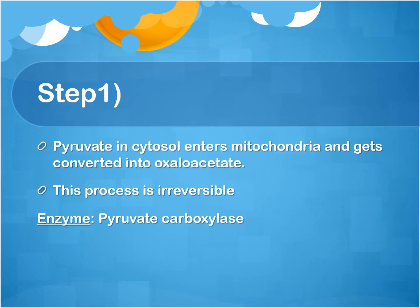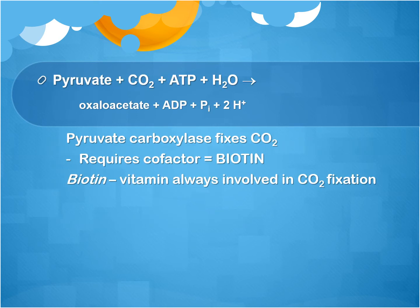The first step of this whole mechanism is the conversion of pyruvate to oxaloacetate. Pyruvate from the cytosol enters the mitochondria and gets converted — this process is an irreversible step, and the enzyme used is pyruvate carboxylase. Pyruvate carboxylase fixes carbon dioxide and requires a cofactor called biotin, which is a vitamin always involved in carbon dioxide fixation.